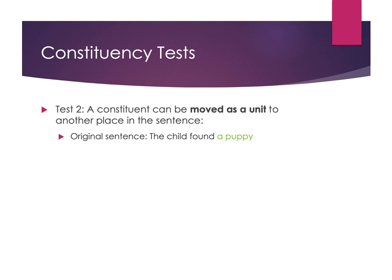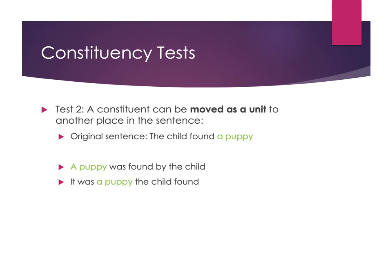For the second test, you can move a constituent as a unit to another place in the sentence. We do this when creating passive sentences or highlighting a piece topically. If we have 'the child found a puppy,' we can move 'a puppy' and say 'a puppy was found by the child' — making it passive and it still works. Or 'it was a puppy the child found.' I have to take the entire phrase though — I can't just take the word 'puppy' and leave the determiner floating. That's how you can tell it's actually a constituent.